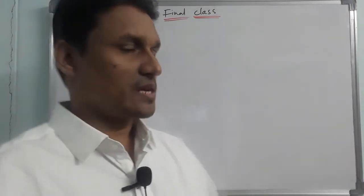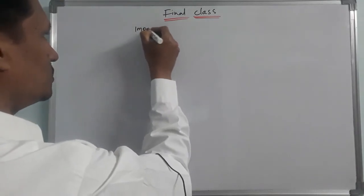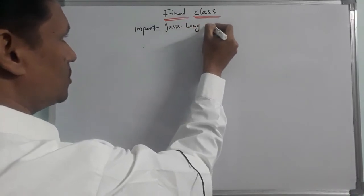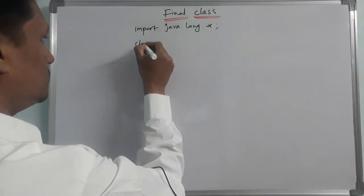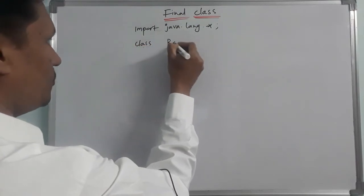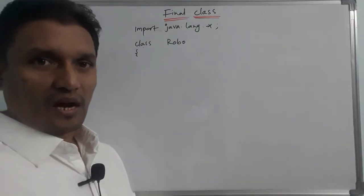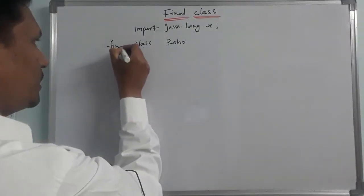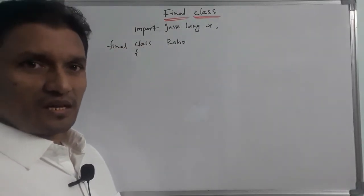So, how can we get the example? The example is import java.lang.*. Here, class for example, one class is a final class. This class is a final class. It is a final class and this class is fixed around.